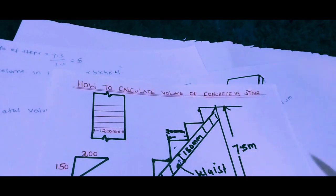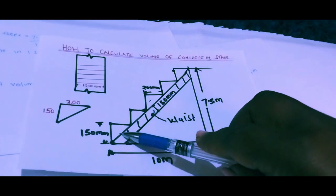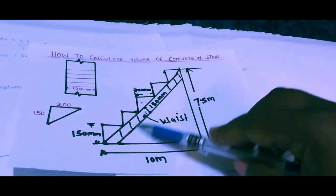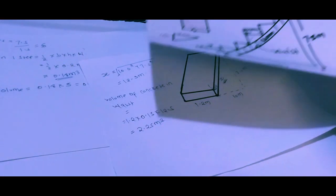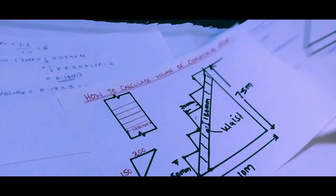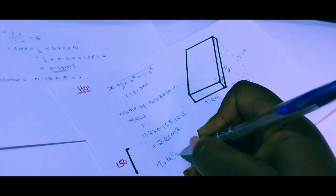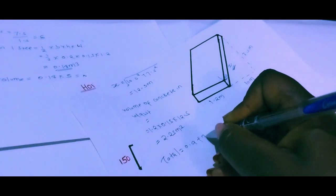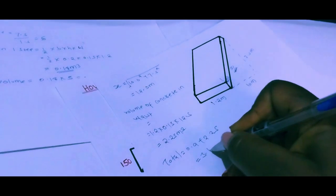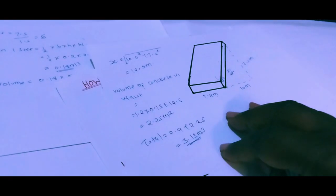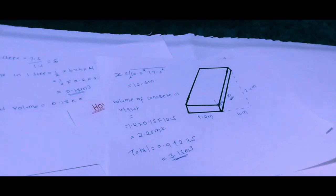We now have both components: the volume in the steps and the volume in the waist. To find the total, we add them: 0.9 + 2.25 = 3.15 cubic meters. That is how you calculate the volume of concrete in a staircase. Until next time, bye bye.